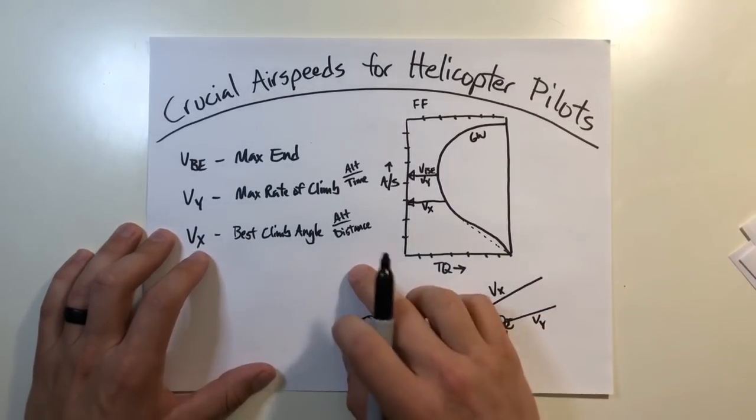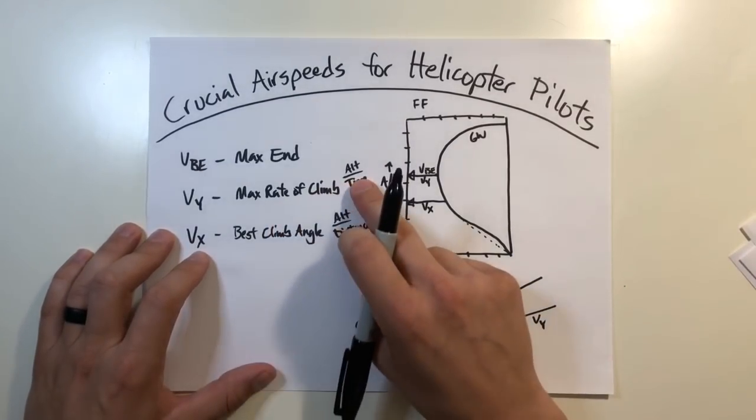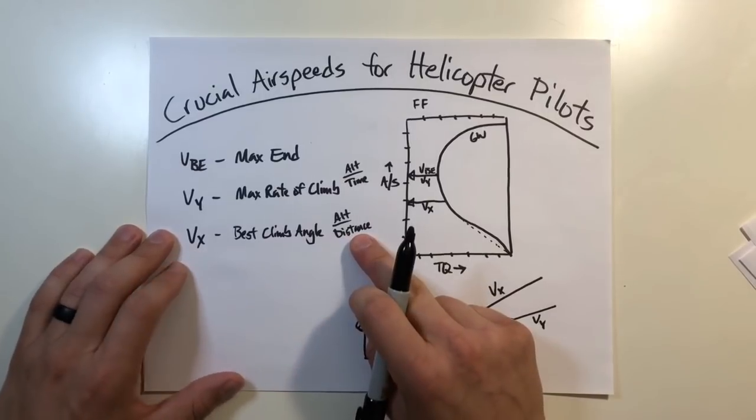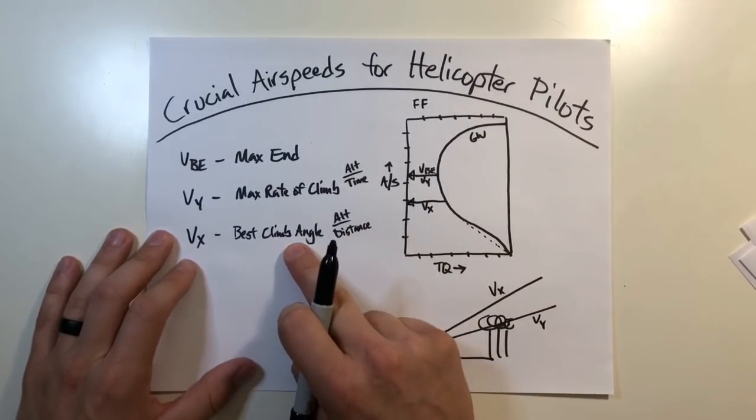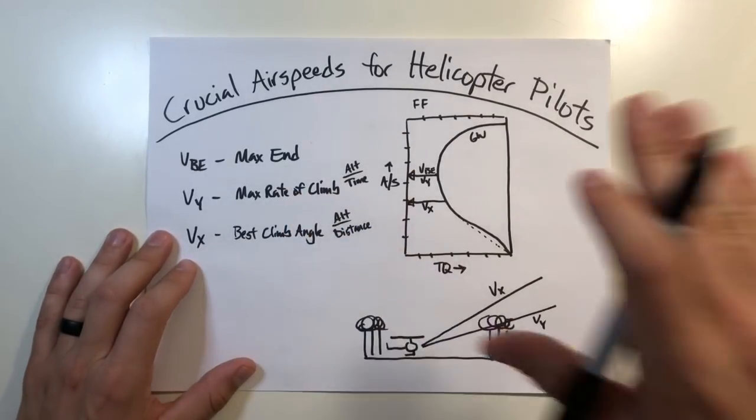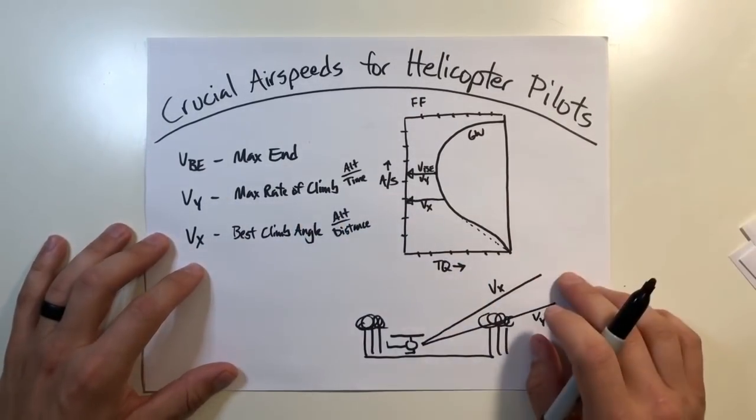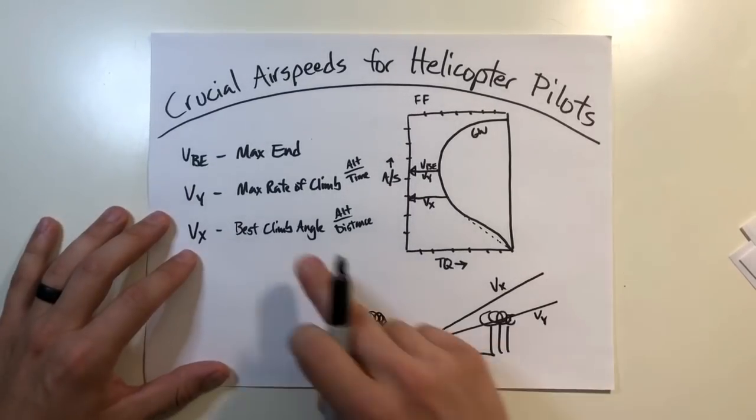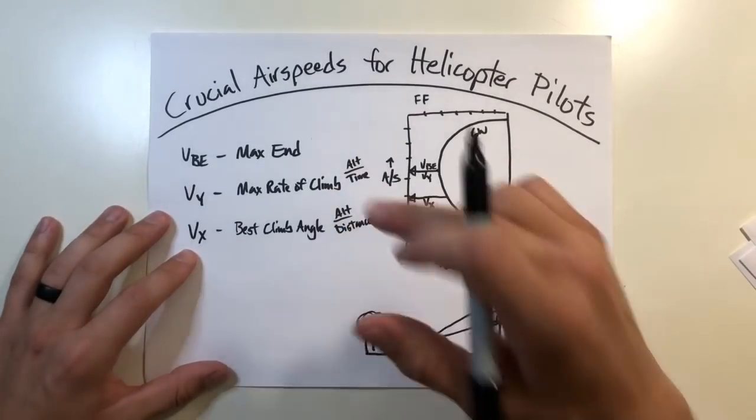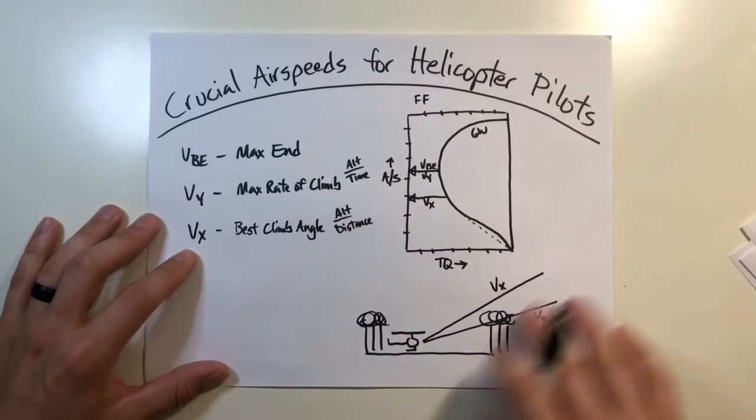But once again, to reiterate, this is going to give you your best climb over time, this is the best climb over distance. This gets you out of tight quarters, this allows you to expedite climbing, you know, thousands of feet when you're going cross country or whatnot, you need to get over something, and it's not so much the distance as it is the amount of time you need to get that altitude gain.